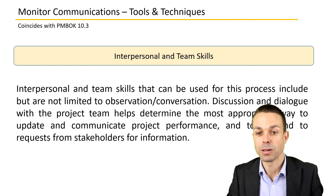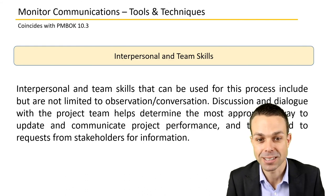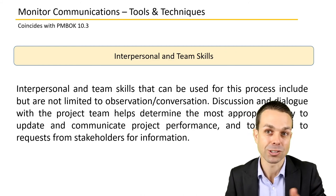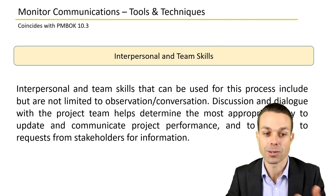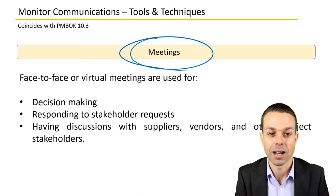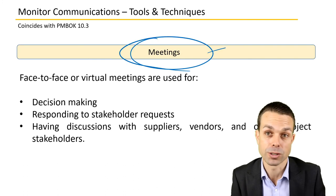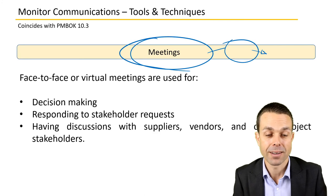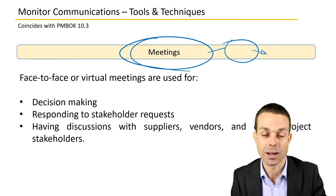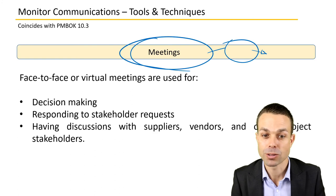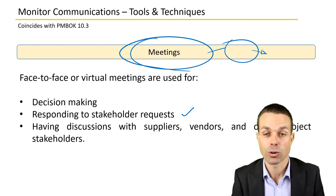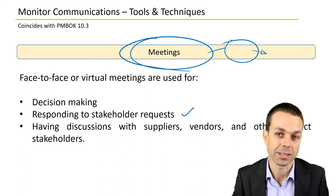Interpersonal and team skills include observation and conversation — we can get a lot of information just by observing how things are going and asking: is this communication working for you? Do you want us to change the way we're updating or communicating project performance? Meetings are also a key tool for gathering or dispersing information, enabling close-proximity decision making, responding to stakeholder requests, and having discussions with suppliers, vendors, or other project stakeholders.